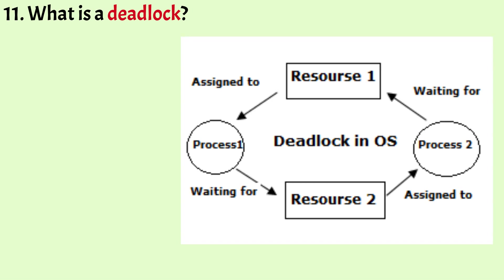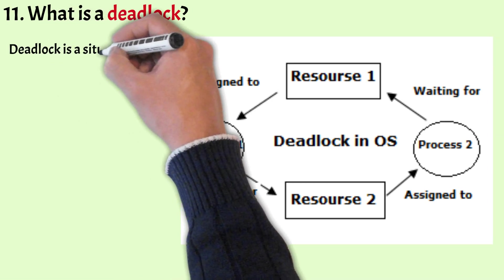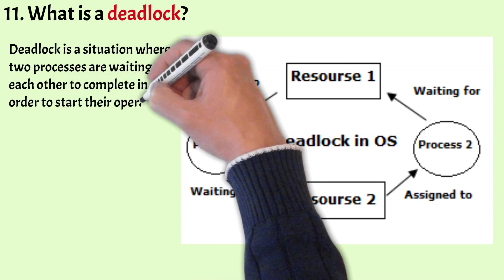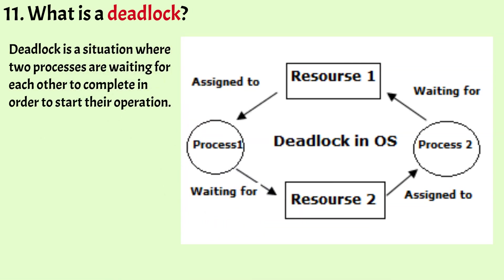What is a deadlock? A deadlock is a situation when two processes are waiting for each other to complete in order to start their operation. This happens when the first process is holding a resource and waiting for another resource currently held by the second process, and the second process is waiting for the resource held by the first process — causing them to wait forever.